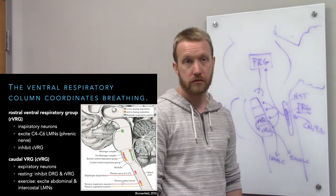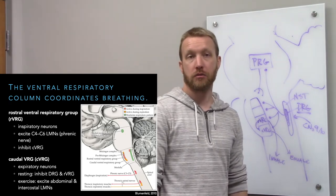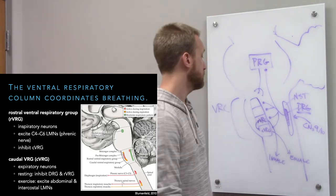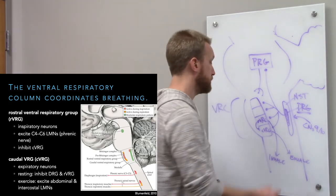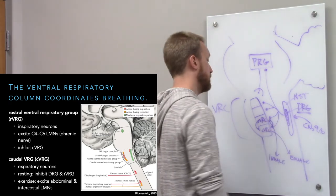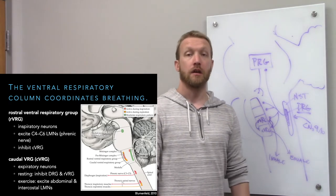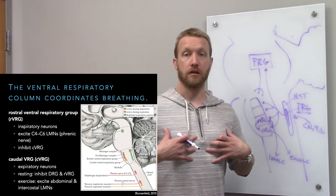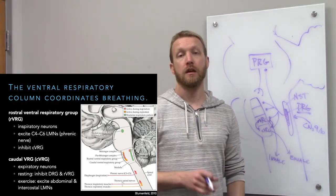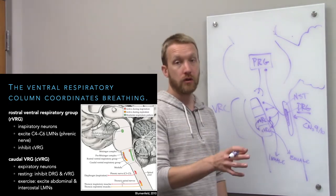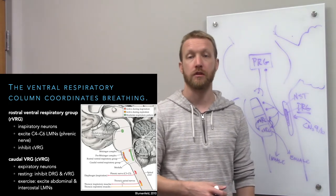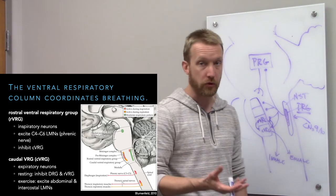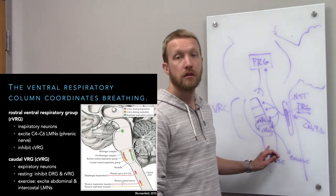The rostral ventral respiratory group stimulates lower motor neurons that cause inhalation via the phrenic nerve. The caudal ventral respiratory group mostly inhibits the rostral ventral respiratory group so we don't inhale. If we just let muscle tone return to normal, pressure in our lungs allows air to passively escape. If excited enough, the caudal ventral respiratory group can stimulate lower motor neurons for forceful exhalation — but that's only during exercise or high CO2 production.